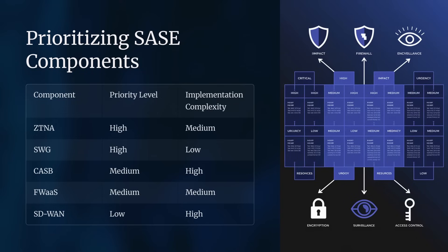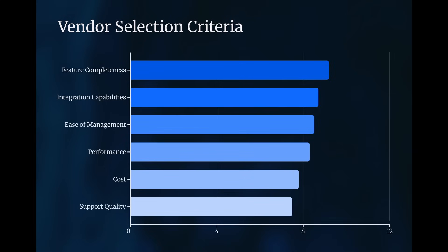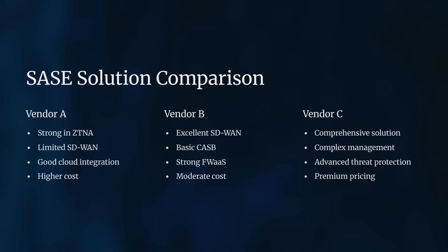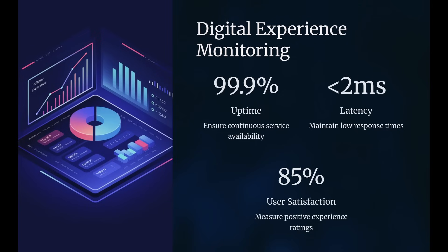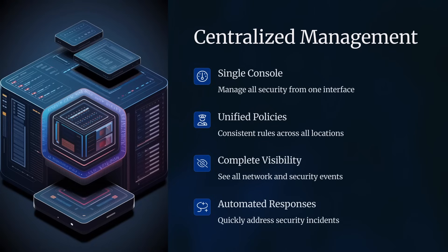Implementation strategies are a key focus of SASE tutorials. They guide organizations on how to assess their current environment and develop a SASE implementation plan. This often involves: one, identifying key business drivers and security requirements; two, evaluating existing network and security infrastructure; three, prioritizing SASE components based on organizational needs; four, planning a phased implementation approach; and five, selecting appropriate SASE vendors and solutions.